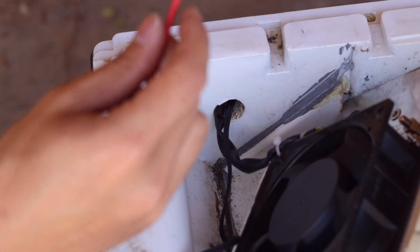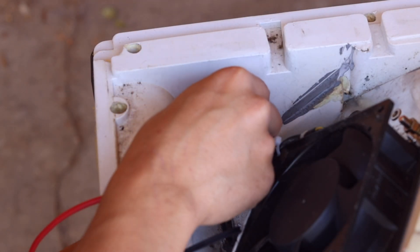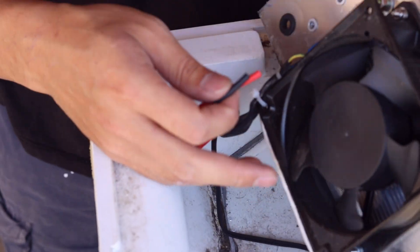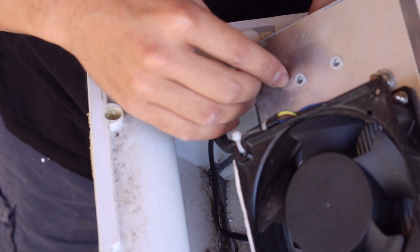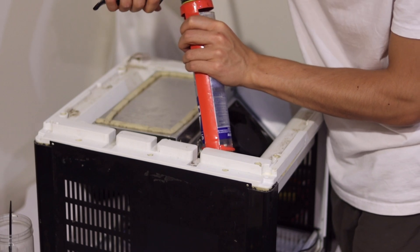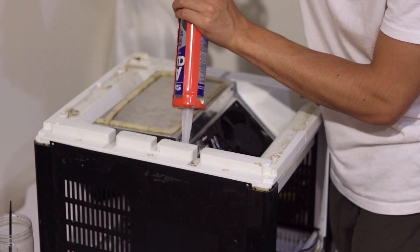The cables from the fan and the heater were then fed through to the bottom of the fridge where all the electricals will hide. After that, I resealed the divider with some sealant so that the air will only flow in one direction.